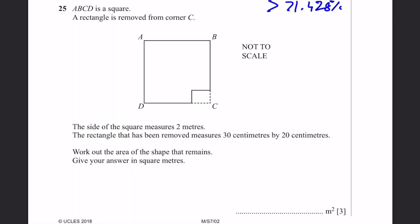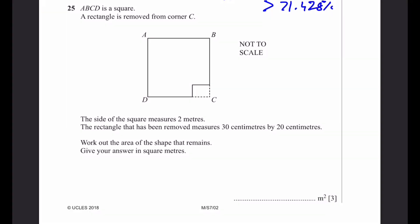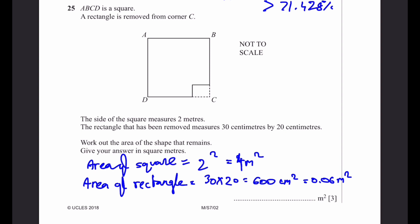Question 25. ABCD is a square. A rectangle is removed from corner C. The size of the square measures 2 meters. The rectangle that has been removed measures 30 centimeters by 20 centimeters. Work out the area of the shape that remains. Give your answer in square meters. The area of square equals 2 squared, which is 4 square meters. The area of the rectangle equals 30 into 20, which is 600 centimeters squared. When we convert to meters squared, we get 0.06 meters squared. The area of the remaining shape equals 4 minus 0.06, which equals 3.94 meters squared. That's the answer.